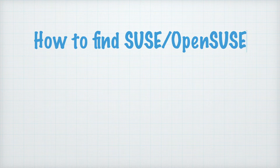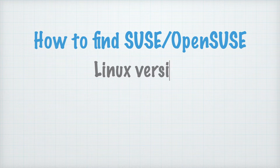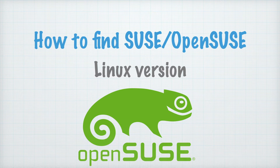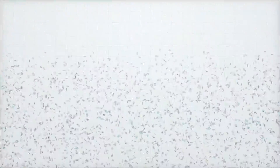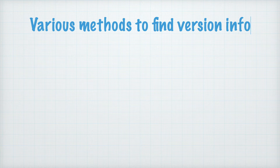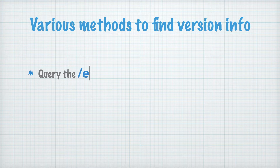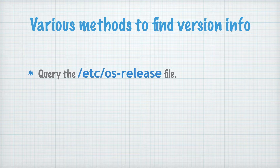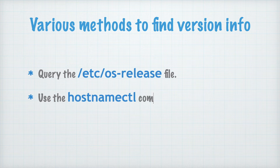Hello world. This quick tutorial shows how to find SUSE Enterprise Linux and openSUSE Linux version using the command line. Basically, there are three different types of commands we can use. We can query the /etc/os-release file, and secondly we can use the hostnamectl command.